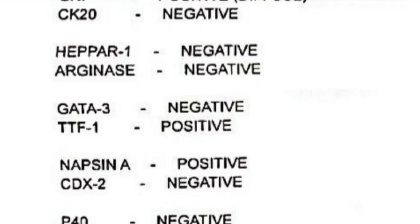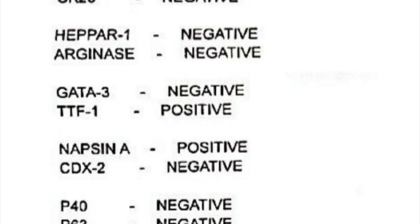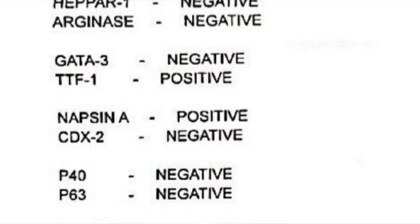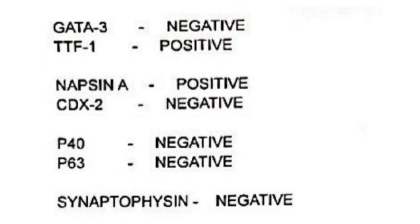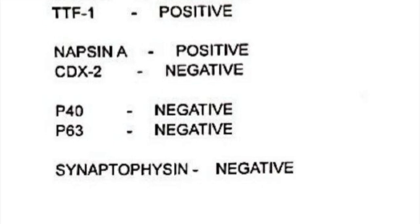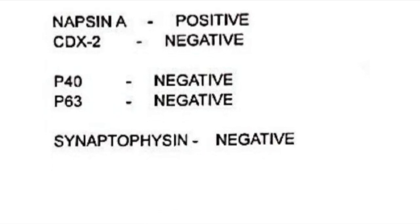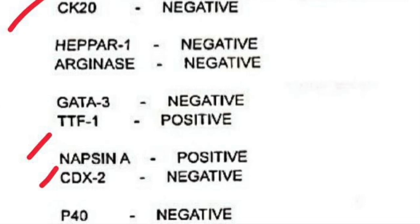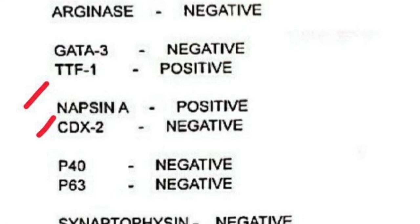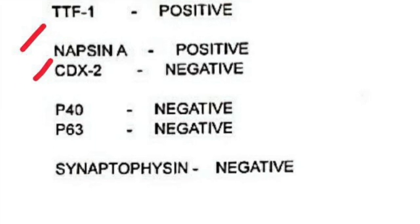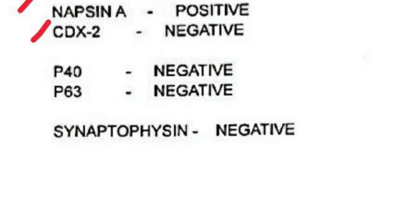IHC was applied, and you can see the list of markers done here. The routine ones include CK7, CK20, TTF1, and Hepar-1 to determine liver origin or otherwise. Of these markers, three are positive: CK7 is positive, TTF1 is positive, and Napsin is also positive. There are a few more markers which I'll reveal later.